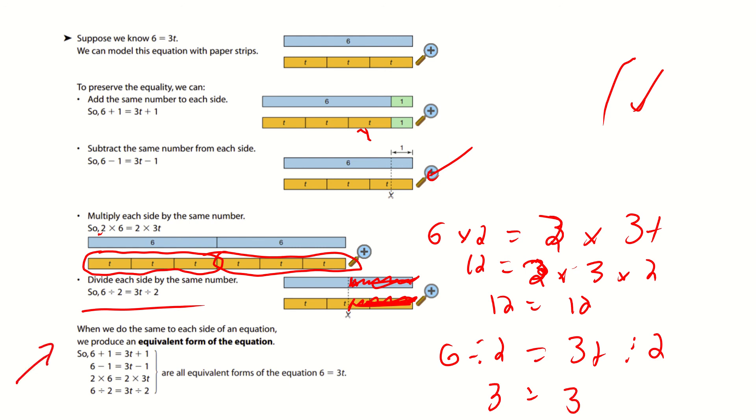So, what it says here, when we do the same to each side of the equation, we produce an equivalent form of the equation. So, 6 plus 1 equals 3t plus 1. 6 minus 1 equals 3t minus 1. 2 times 6 equals 2 times 3t. And 6 divided by 2 equals 3t divided by 2. Are all equivalent forms of the equation 6 equals 3t.